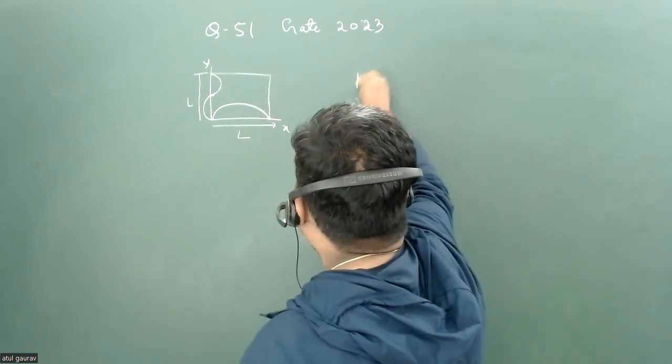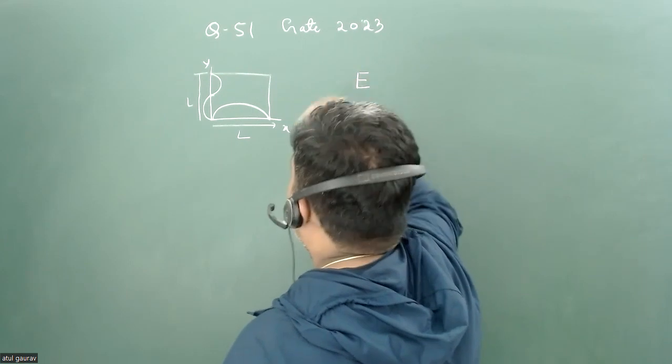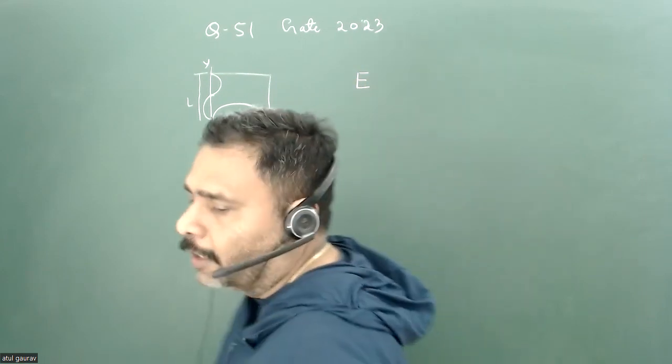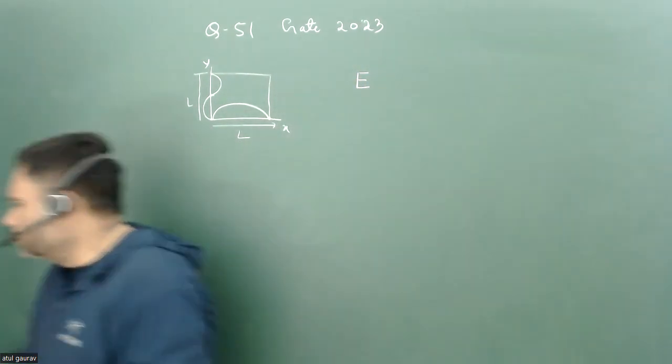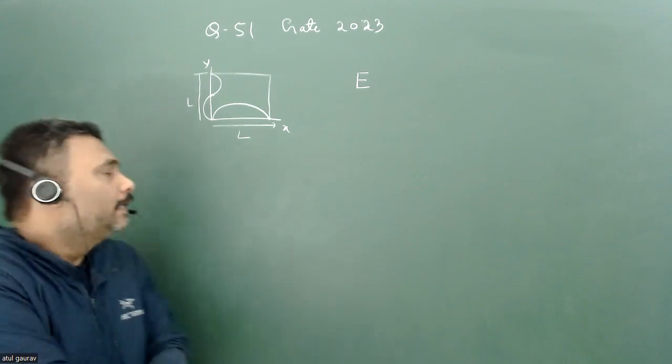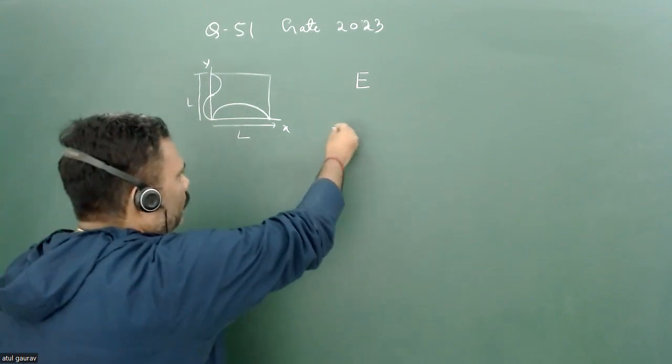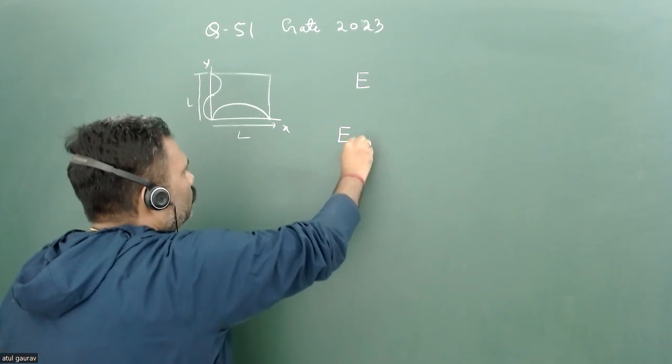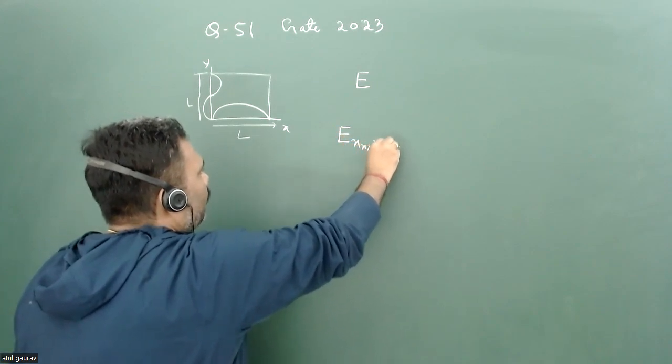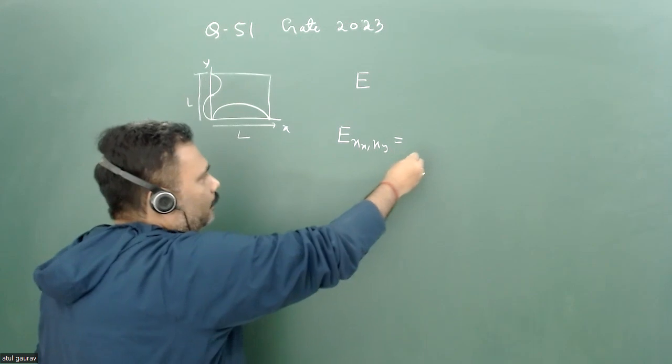So it is given if you have this sort of mode then energy is E. Then what will be ground state energy? So obviously we know that for the particle in a two-dimensional box we have to use two quantum numbers, that is nx and ny.